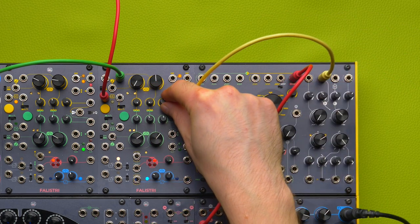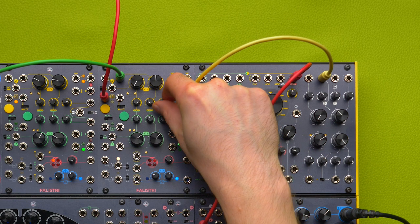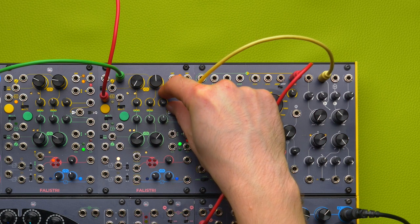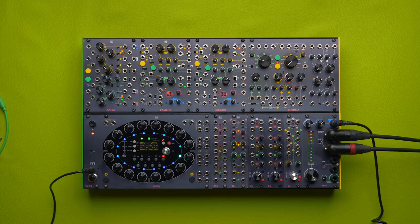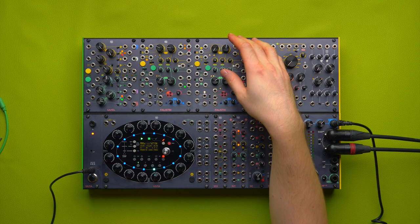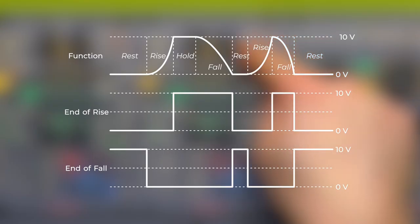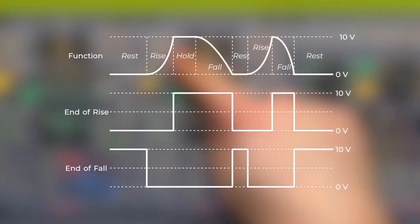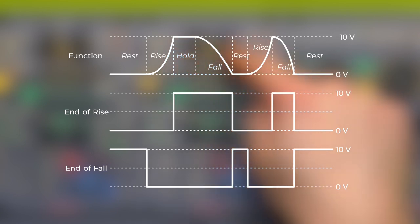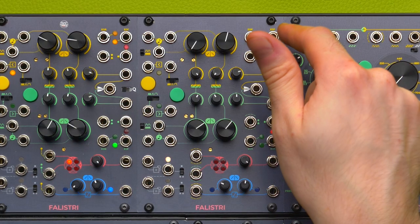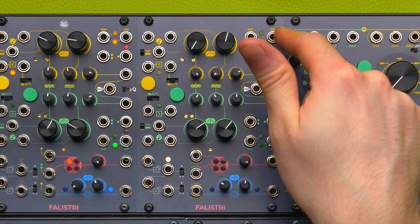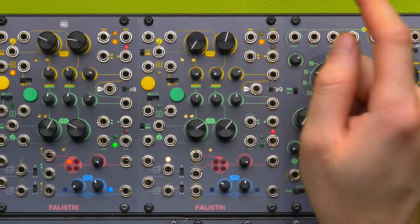By rotating this knob clockwise we will attenuate the envelope and by rotating it counter-clockwise we will invert it. If our modulation target does not have an attenoverter, such as Brainstaur's symmetry parameter, we can use Falistri's attenuverted output. With the transient behavior, the falling stage will start immediately after the rising one. At the end of both stages Falistri will output a gate high signal. The end of rise gate goes high after the rising stage and goes low at the end of the falling stage.